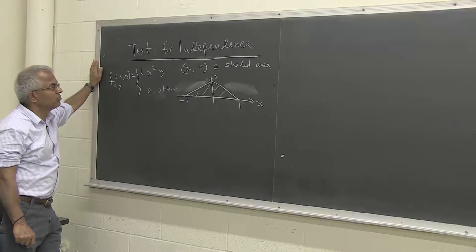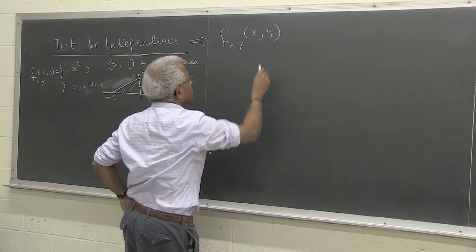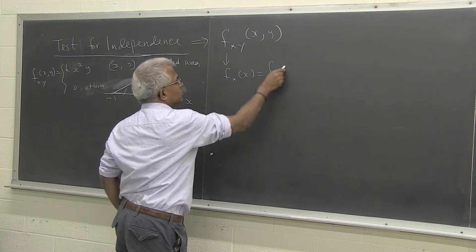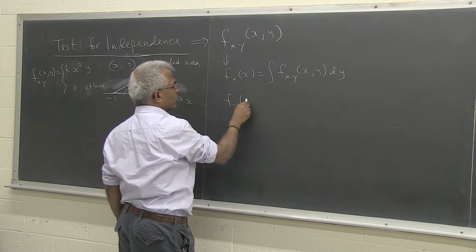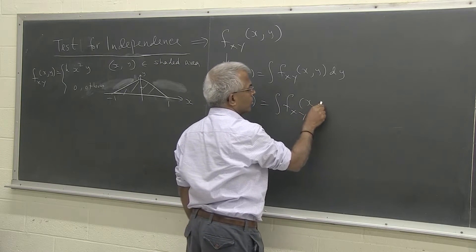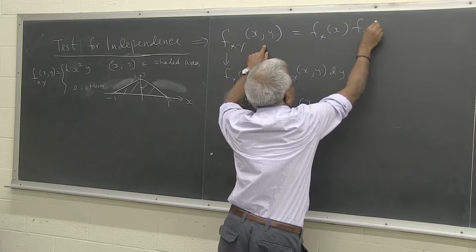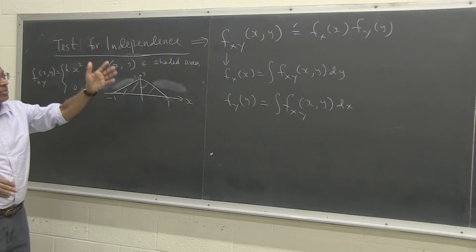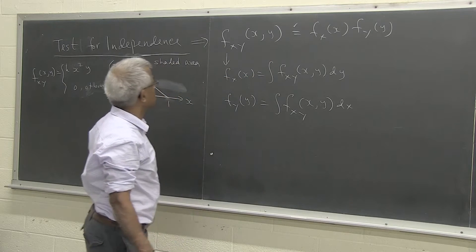Test for independence of two random variables X and Y. You have the joint density function of X and Y, and to test whether they are independent, you need to find the marginals f_X(x) — which is the integral of f(x,y) integrating out Y — and also find f_Y(y) by integrating out X. Then you take this product and check whether f(x,y) = f_X(x)·f_Y(y) is true or false. If the product does not agree with the given joint density function, then the two random variables are not independent.